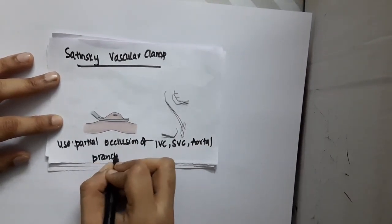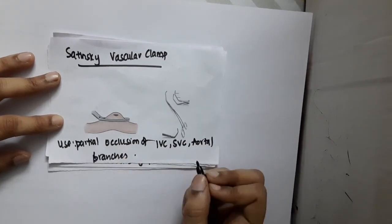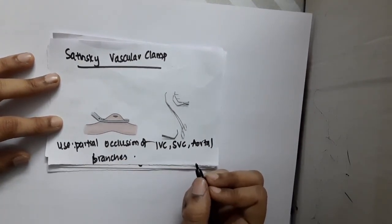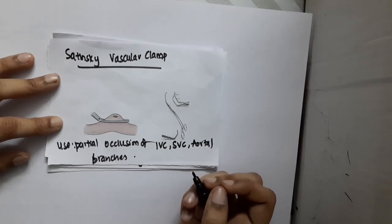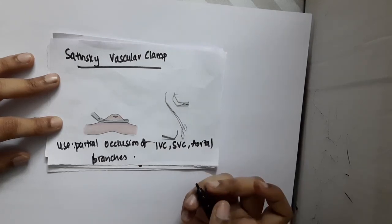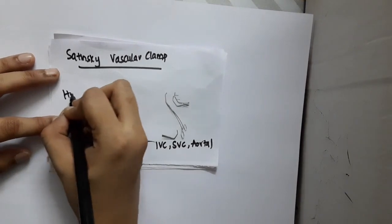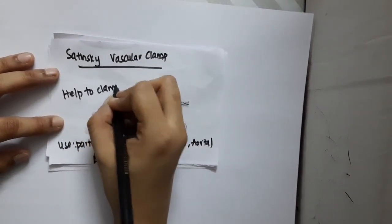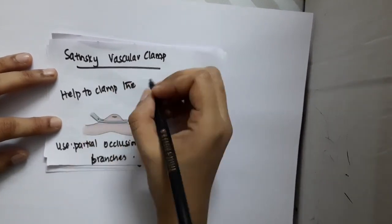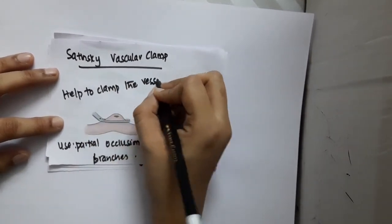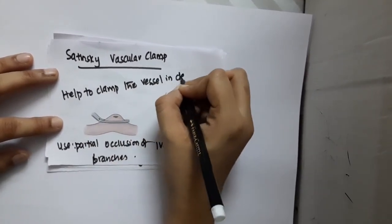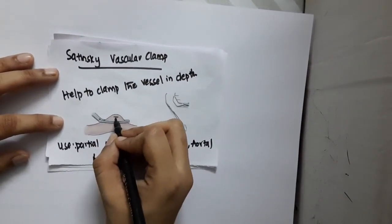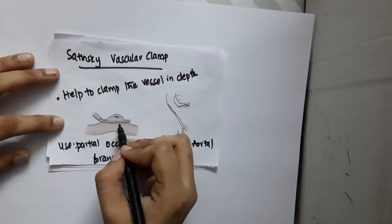This is the Satinsky vascular clamp. The main advantage is it helps clamp vessels at depth. When the vessel is deeper, we can clamp like this so the surgeon's view is not occluded.